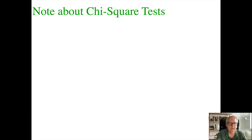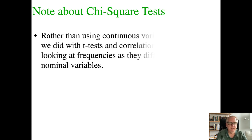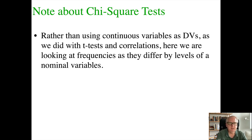Going back to this example, you can see it's quite different from what we've been doing in previous weeks. Rather than using continuous variables as our dependent variable — as we did with t-tests and correlations — here we're looking at frequencies as they differ by levels of nominal variables. Right now I just have one nominal variable, but we can even do this with multiple nominal variables. Let me first show you how we do this in Jamovi.